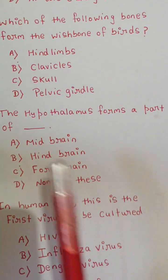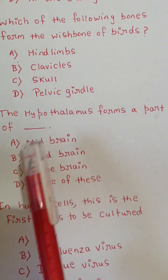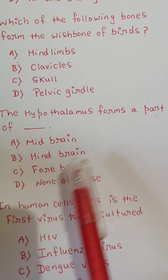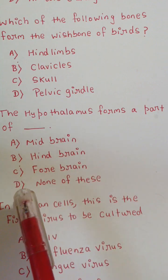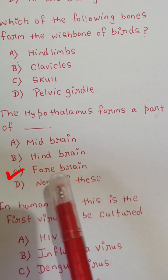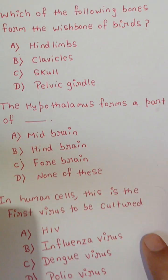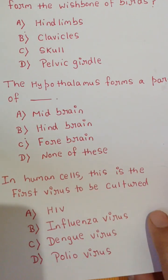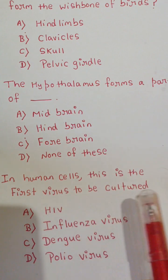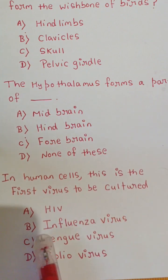The hypothalamus forms a part of: A) Midbrain, B) Hindbrain, C) Forebrain, or D) None of these. The correct option is C: Forebrain.